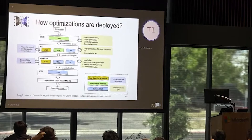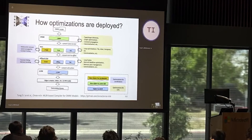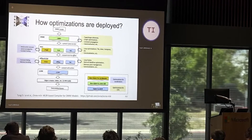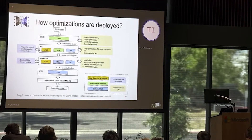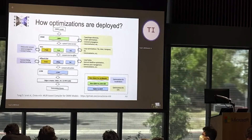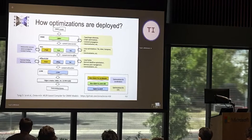Let's look a bit more at how optimizations are deployed in ONNX-MLIR. From top to bottom, an ONNX model is gradually lowered into intermediate representations, and finally a binary is produced. At each intermediate representation, we have multiple dialects for CPU and accelerator — some built-in dialects from MLIR, and some newly introduced in ONNX-MLIR for CPU and accelerator.